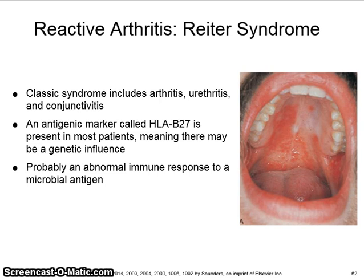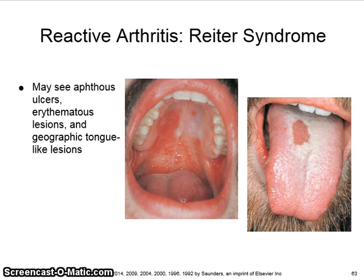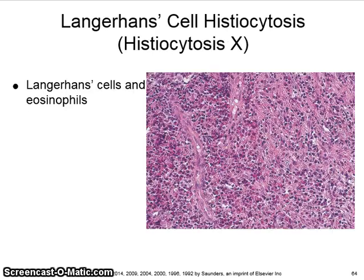Reactive arthritis, or Reiter's syndrome, is a classic syndrome which includes arthritis, urethritis, and conjunctivitis. An antigenic marker called HLA-B27 is present in most patients, meaning there may be a genetic influence. It is probably an abnormal immune response to a microbial antigen. In Reiter's syndrome, you may see aphthous ulcers, erythematous lesions, and geographic tongue-like lesions.